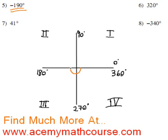So we're right here, 10 degrees past the 180, and that's it. We're in the second quadrant with negative 190 degrees.